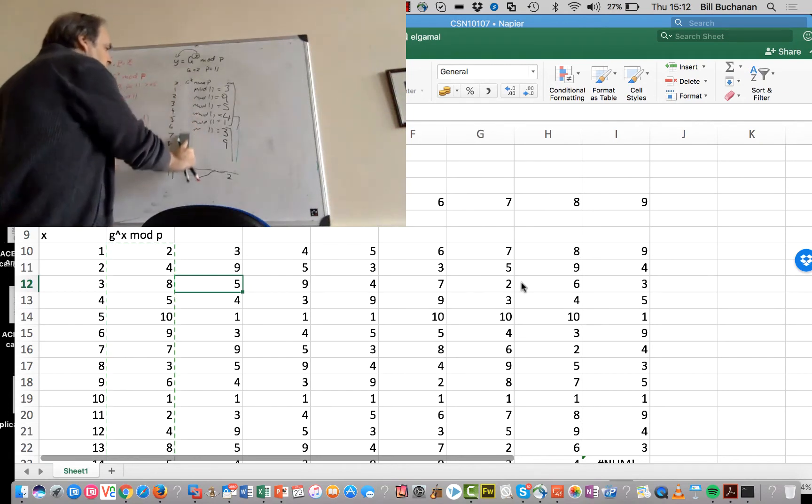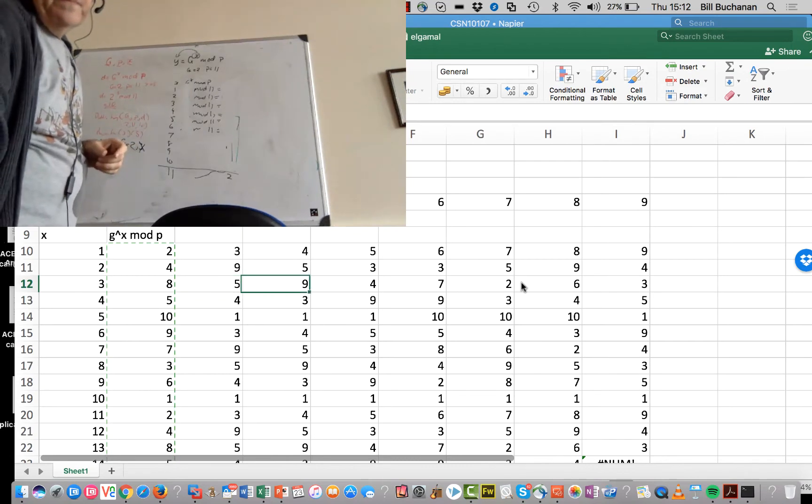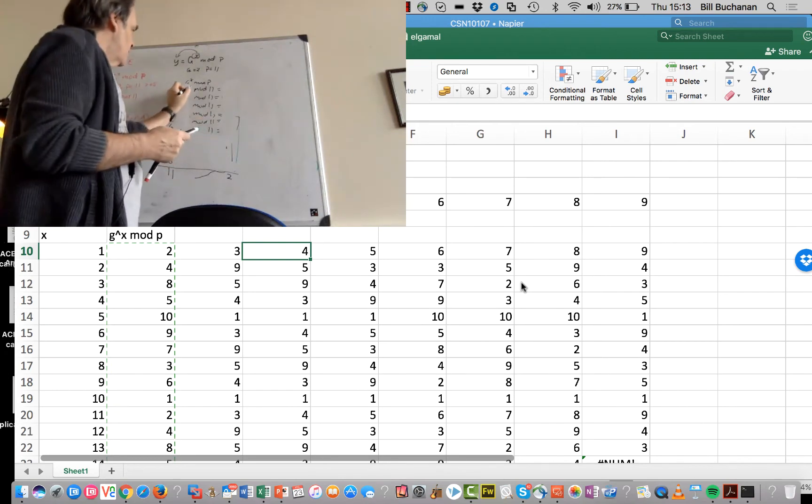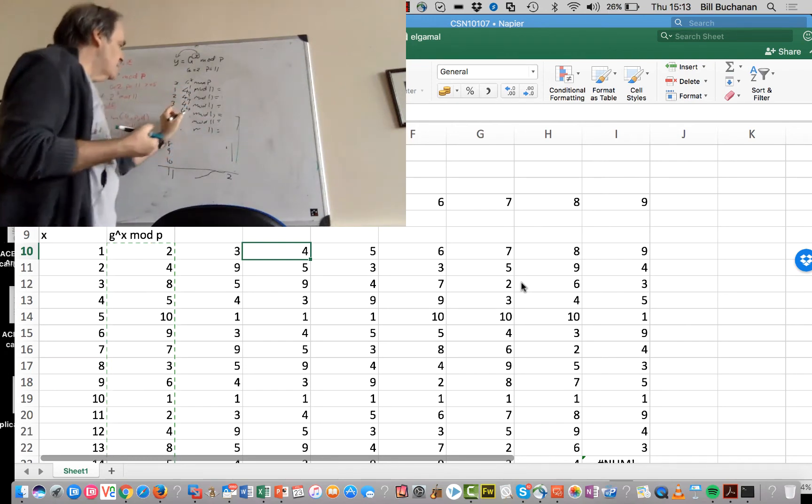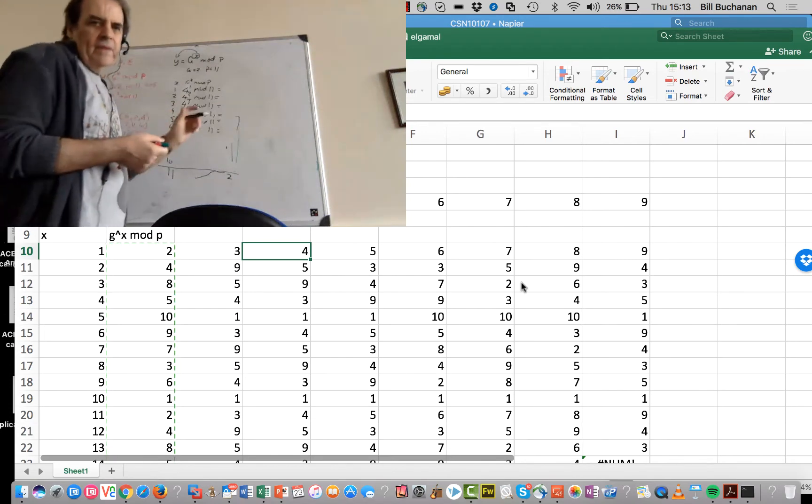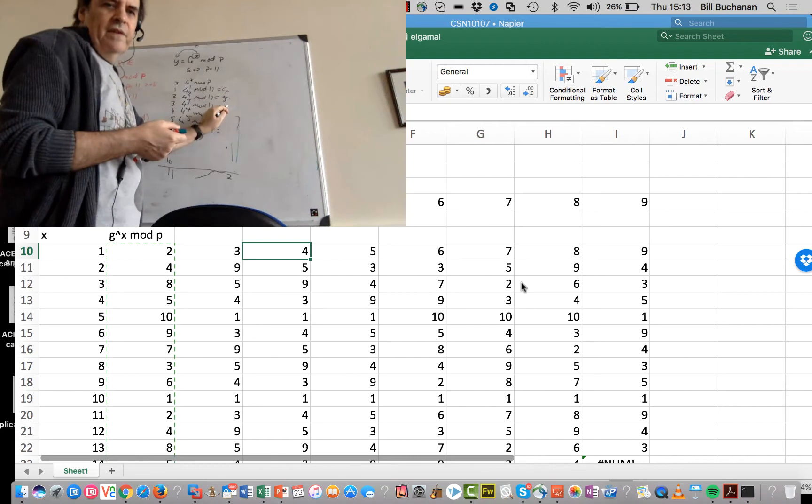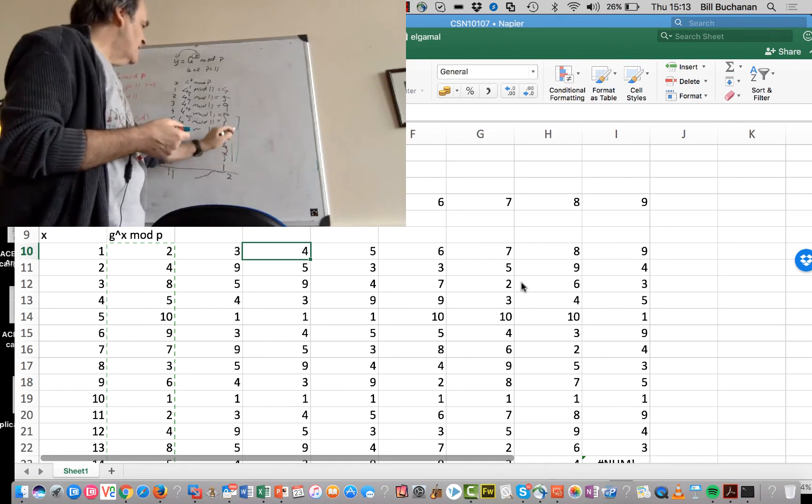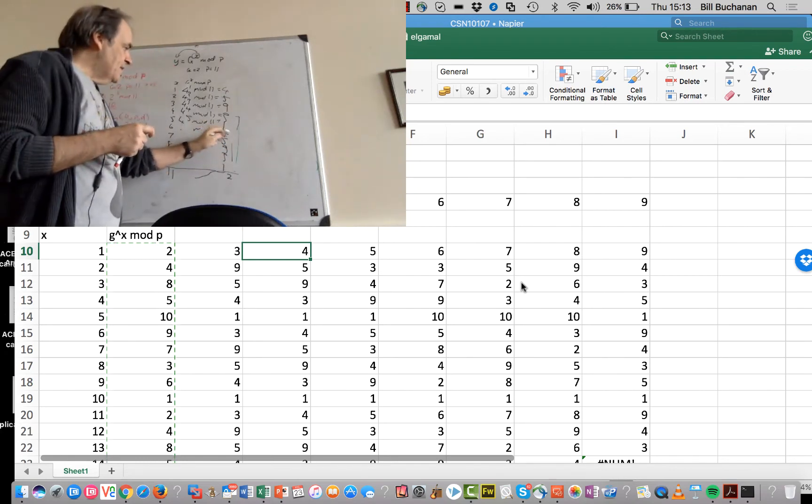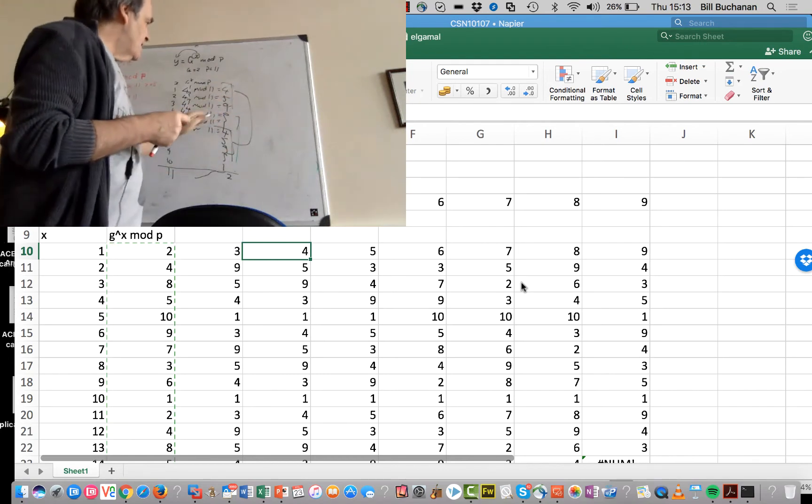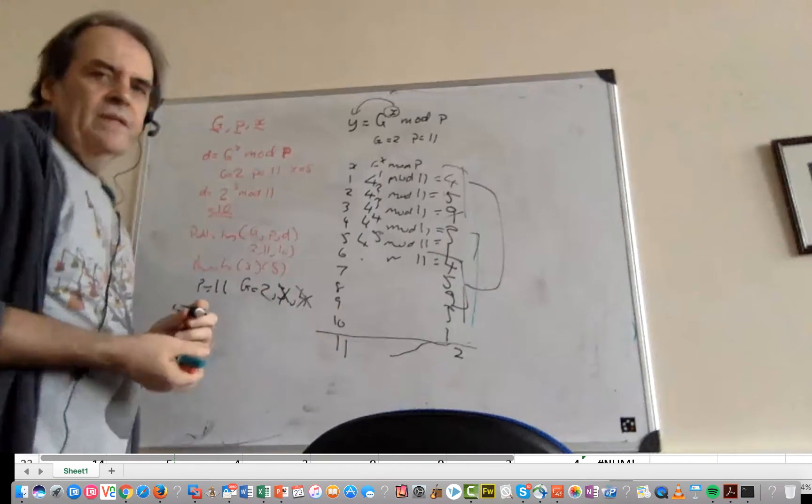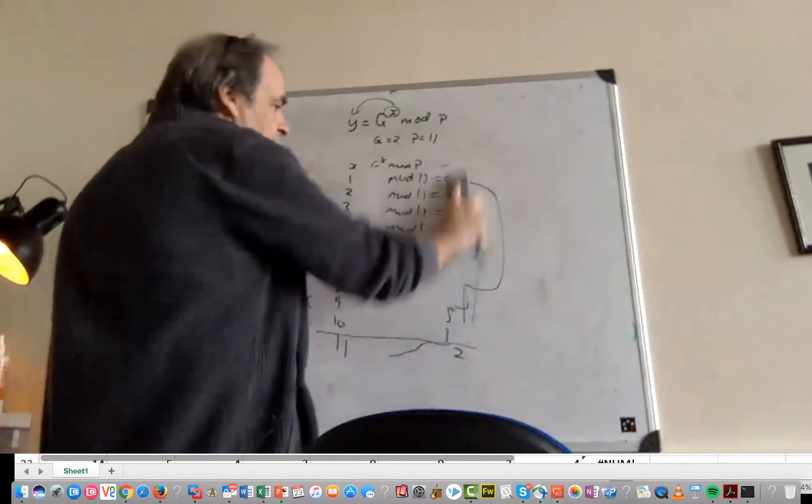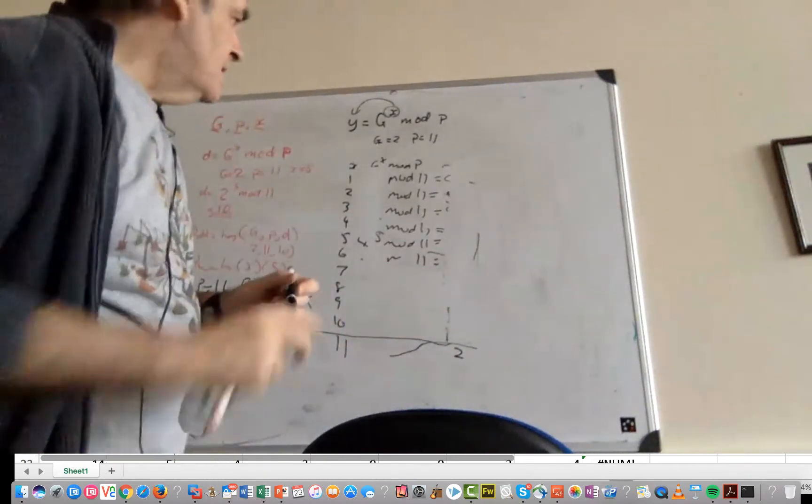Let's try G equals 4. We calculate 4 to the 1, 2, 3, 4, 5 mod 11, and we get 4, 5, 9, 3, 1, 4, 5, 9, 3, 1. It repeats again, so we can't use 4. The same thing happens for 5.